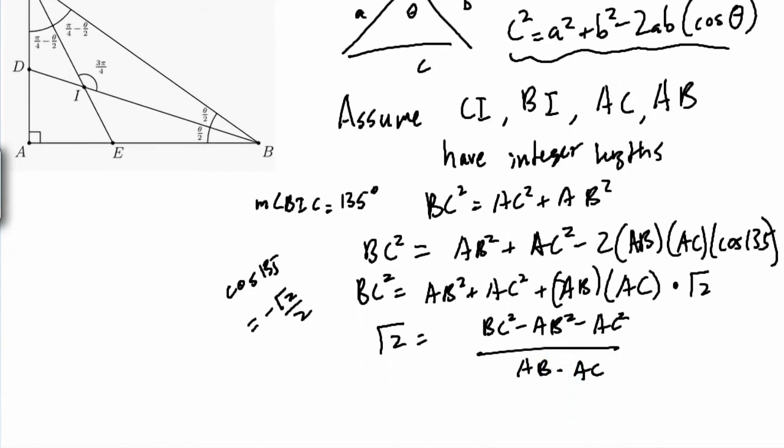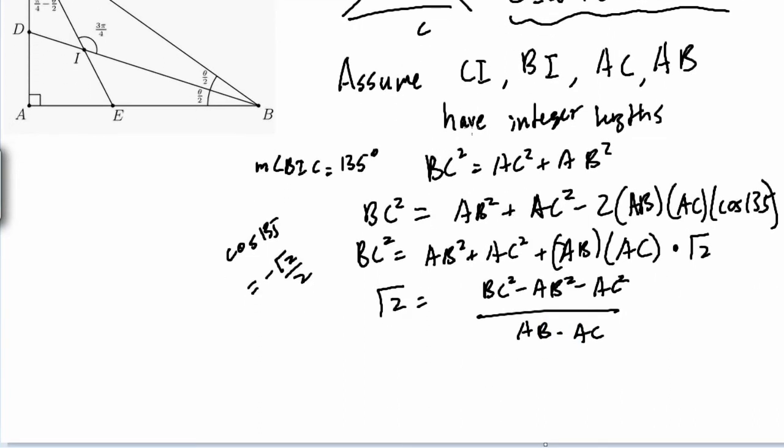So let's look at this for a sec. BC squared has to be an integer. Okay? We know that. BC squared has to be an integer if we assume that these are, if we assume that all these have integer side lengths. AB squared has to be an integer. AC squared has to be an integer. AB times AC, since they're both integers, has to be an integer.